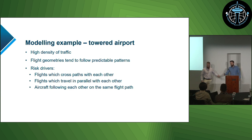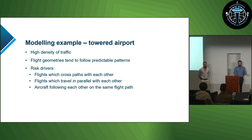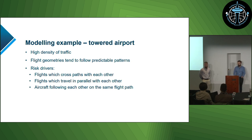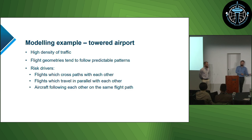Let's take a look at a real example of a risk assessment within ARMS, focusing on airspace surrounding a controlled airport — a larger airport like Sydney, Melbourne or Brisbane. This type of airspace is characterised by a relatively high number of flights each day, and aircraft tend to follow very similar patterns into and out of the airport. ARMS implements different models depending on the airspace scenario being assessed, to reflect the different characteristics of aircraft behaviour in different types of airspace.